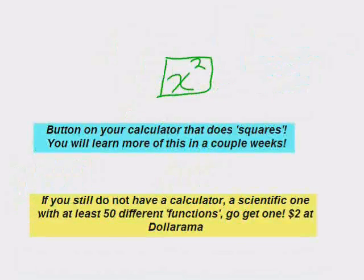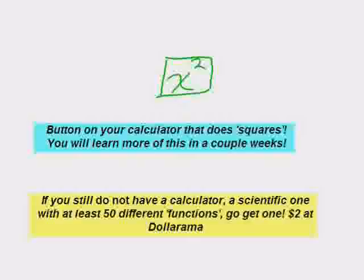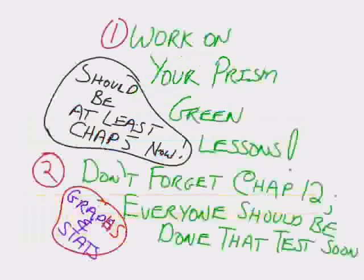If you want to practice what he was doing on that video, the mathemagician squaring numbers, that just means multiply a number by itself. There's a button on your calculator that does it. It's the x squared button. So all you do is you type in a number, you hit x squared, it multiplies it by itself. If you still don't have a calculator that has at least 50 little functions, go get one. They're $2 at dollarama.